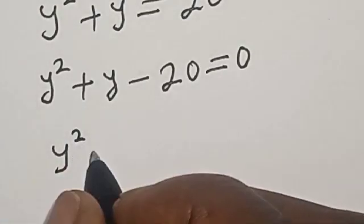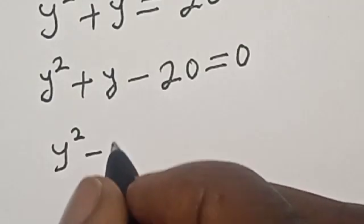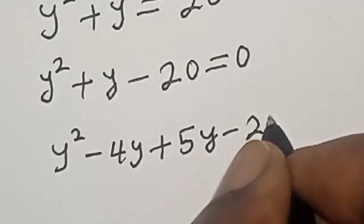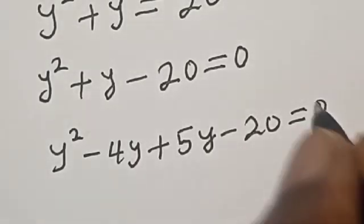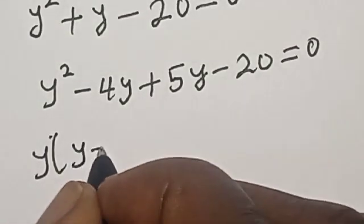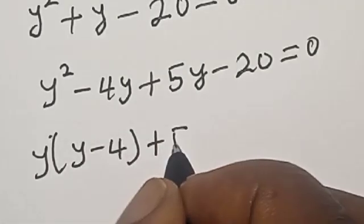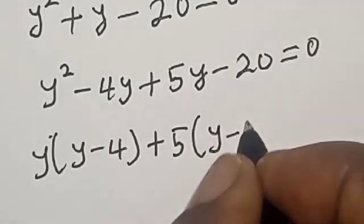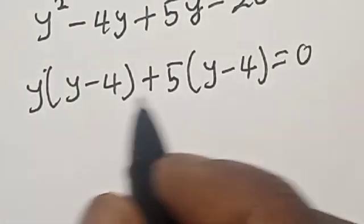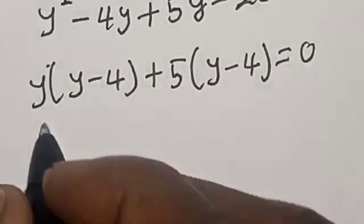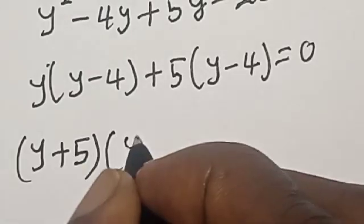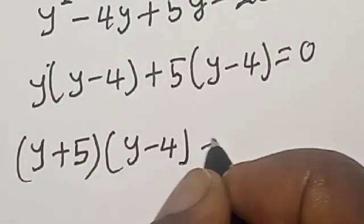Let's solve this using the factorization method. y squared minus 4y plus 5y minus 20 is equal to 0. y into y minus 4, plus 5 into y minus 4, is equal to 0. So y plus 5, multiplied by y minus 4, is equal to 0.